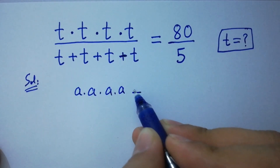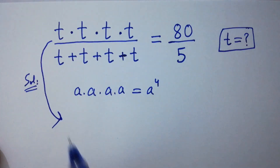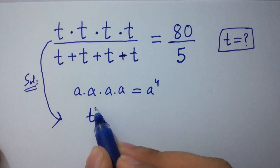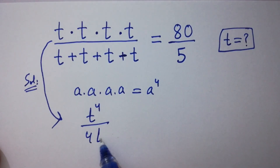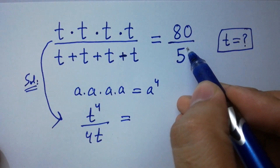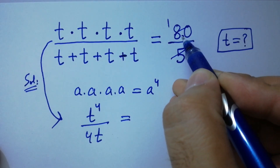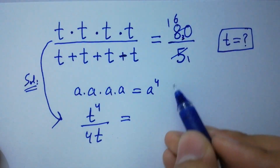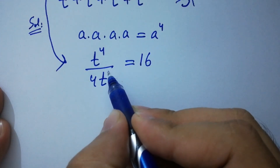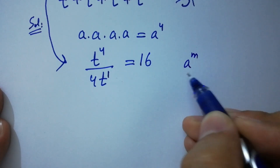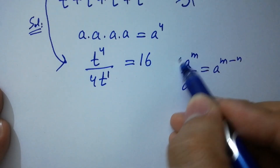Then it will be t to the power 4 over here. t can be common in the denominator, so we have 4t. We also simplify 80 over 5: 5 times 16 is 80, so 80/5 equals 16. As we know, a to the power m over a to the power n equals a to the power m minus n.